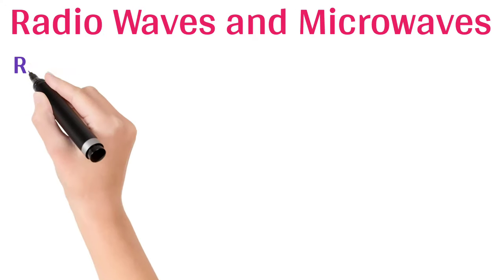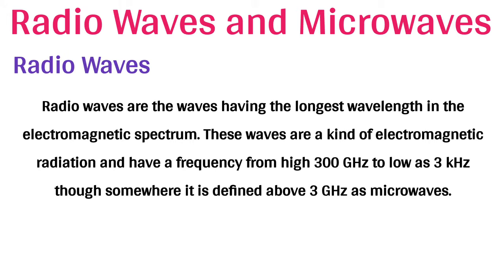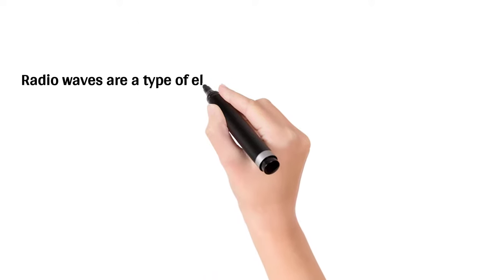Radio waves and microwaves. Radio waves. Radio waves are the waves having the longest wavelength in the electromagnetic radiation. Radio waves are a type of electromagnetic radiation